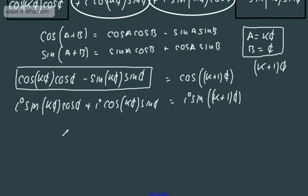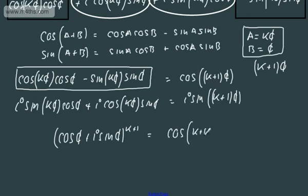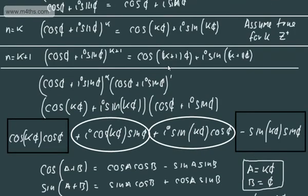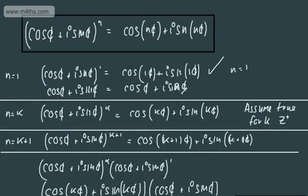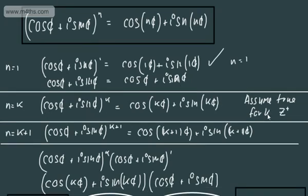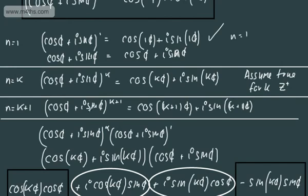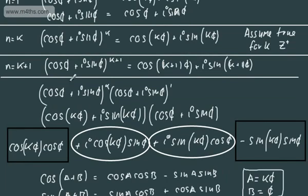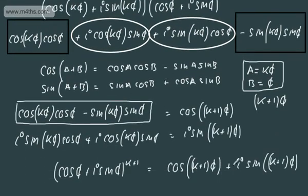So we can now see that cos θ plus i sin θ to the power of k plus 1, based on our assumptive step, is equal to cos((k+1)θ) plus i sin((k+1)θ). We can conclude our proof by induction by saying: it holds true for n equals 1; assume it holds true for n equals k where k is a positive integer; if it holds true for n equals k, it holds true for the next integer k plus 1. We've expanded it out and used the trig identity to collect everything up.